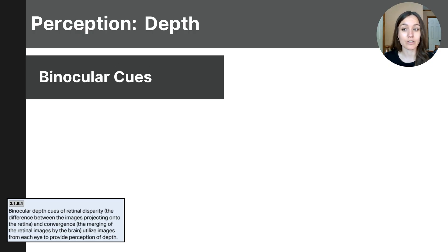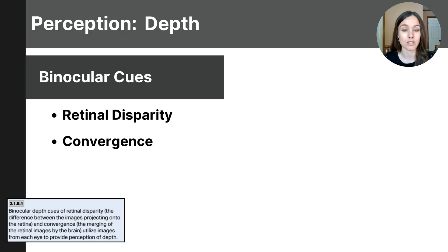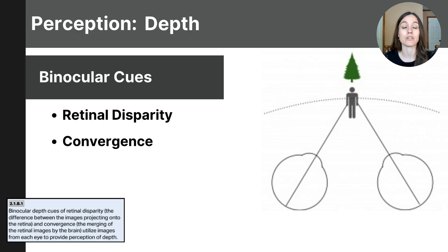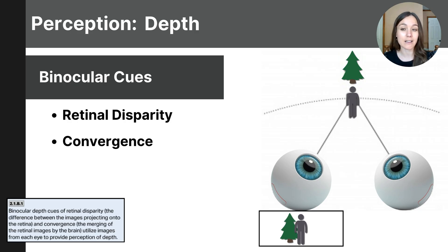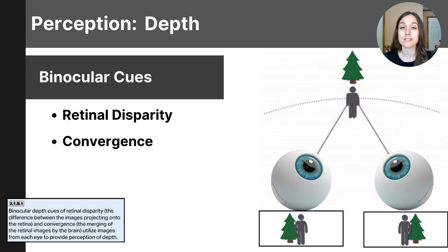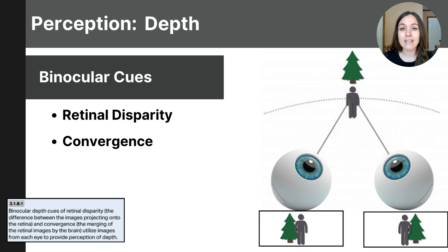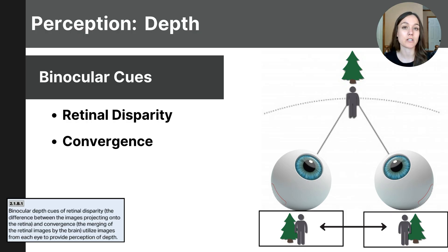Let's start with binocular cues, specifically two kinds: retinal disparity and convergence. Imagine you are looking at a man in the distance with a tree directly behind him. Each eye captures a slightly different image — the left eye sees the man slightly to the right of the tree, while the right eye sees the man slightly to the left. These two slightly offset images are combined by the brain to create a single, more accurate representation of the scene, allowing the brain to interpret the exact location of the person.